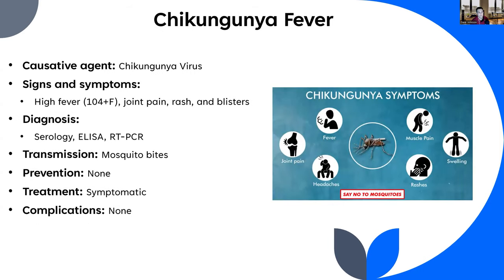Chikungunya, caused by the chikungunya virus, is another mosquito-borne hemorrhagic fever. It causes a high fever around 104°F, joint pain, rash, and blisters. People describe it as feeling like your body is on fire for about a week. Diagnosis is via serology, ELISA, and RT-PCR. There is no prevention and treatment is symptomatic. Unlike dengue, chikungunya is not fatal — though extremely miserable.